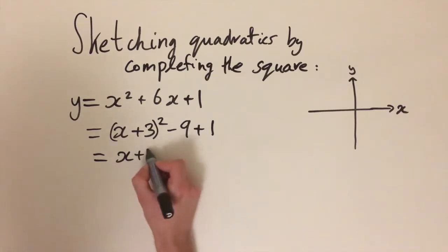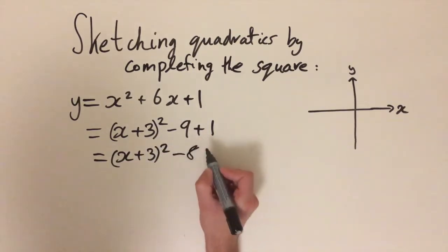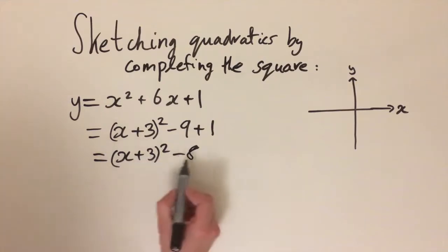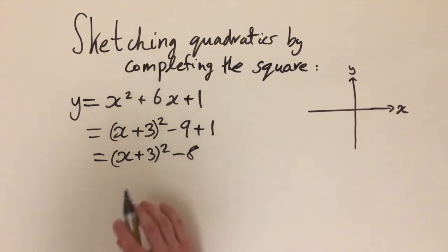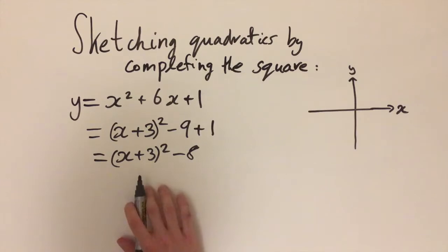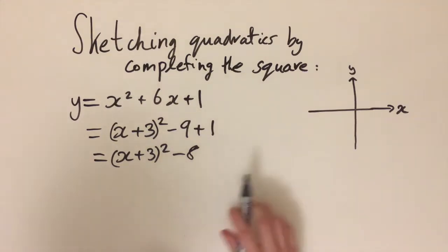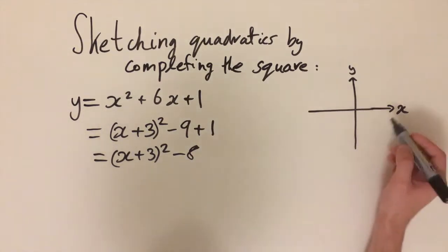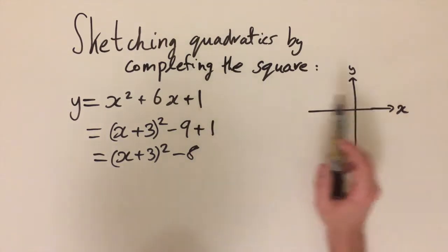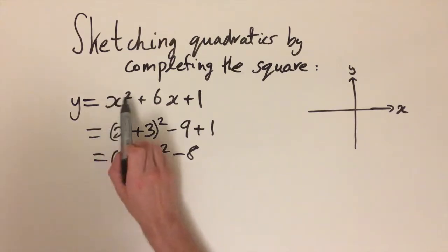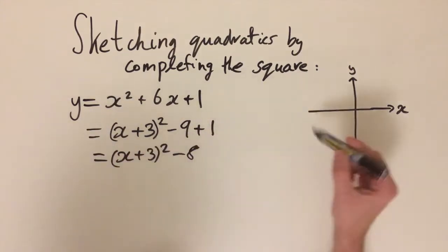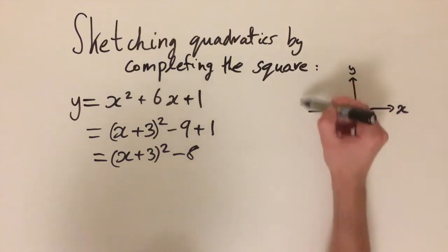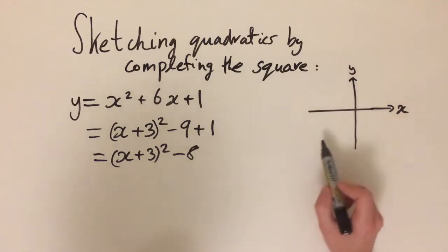Collecting terms and simplifying, we have (x + 3)² − 8. This is the completed the square form. We can use this to find the maximum or minimum of the function. First, let's think about the shape of the graph: the x² coefficient is 1, which is positive, so the graph is going to point upwards and head to positive infinity.